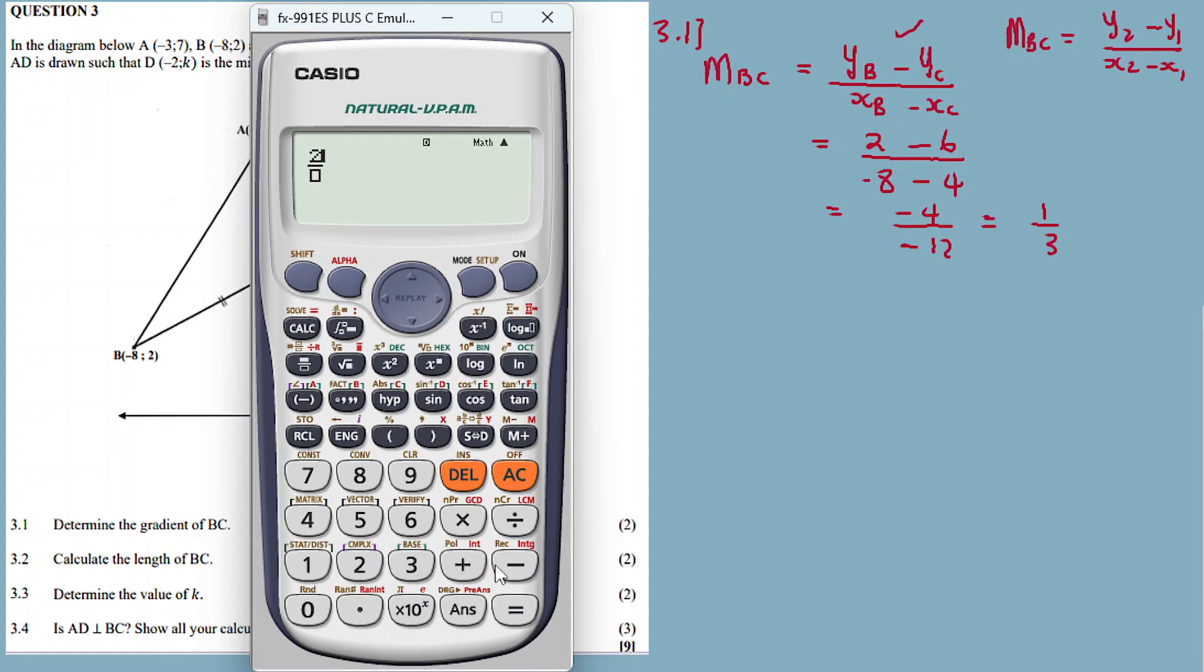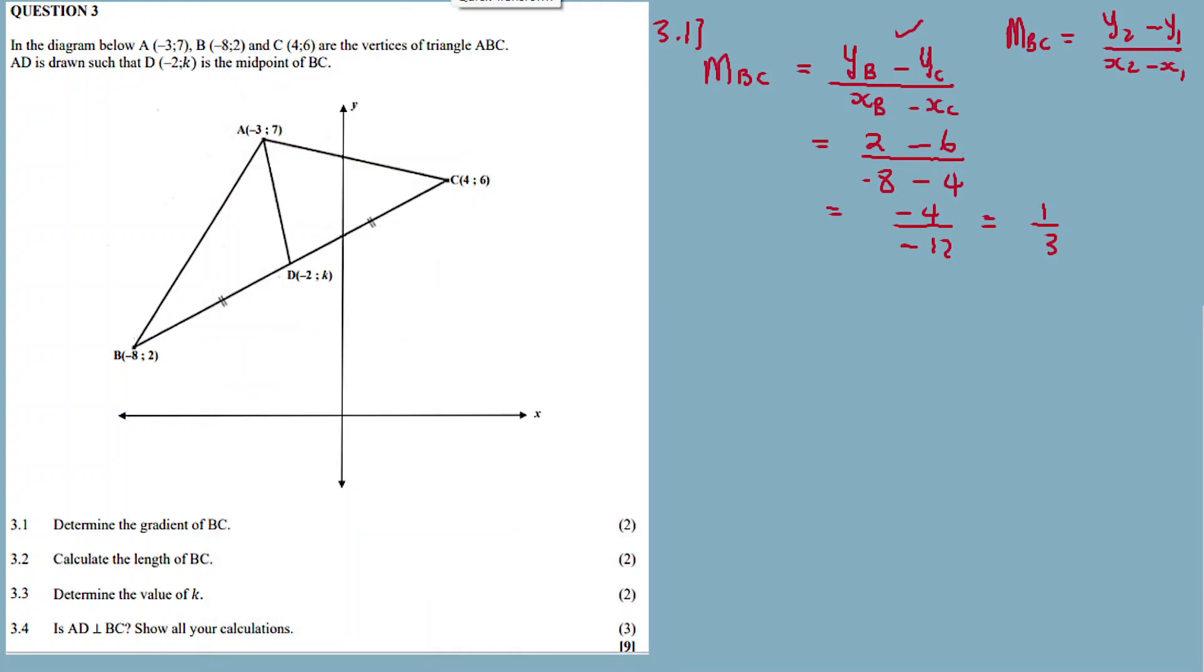So 2 minus 6 divided by minus 8 minus 4, the answer is 1 over 3. Yes, our answer is 1 over 3. Alright, now 3.2.